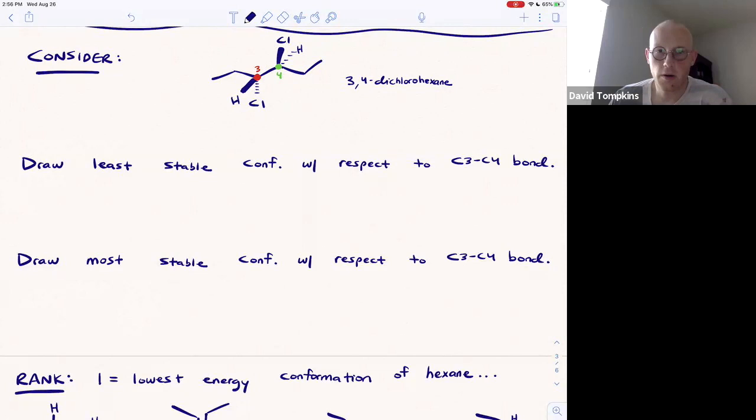Here we're asked to draw two different conformations, or two Newman projections: the least stable conformation with respect to the C3-C4 bond and the most stable conformation.